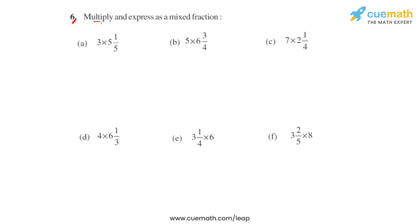Question number 6 says to multiply and express as mixed fractions. In part a, we have 3 times 5 and 1 fifths. We'll convert 5 1 fifths into an improper fraction: 5 times 5 is 25, 25 plus 1 gives us 26, so 26 over 5.